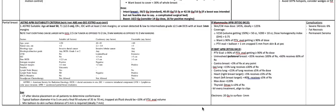The dose for intact breasts should be 50 Gy in 25 fractions (standard), 40.05 Gy in 15 fractions, or 42.56 Gy in 16 fractions. If a boost was intended but not feasible due to a complicated surgical bed, the boost should be 10 Gy in 2 Gy fractions. Consider 14 Gy for close margins or 16 Gy for positive margins.